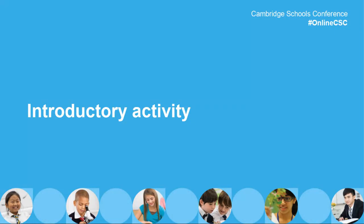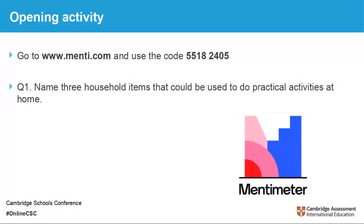It's lovely to be working across the world with so many people from different places. We're going to start by interacting using Mentimeter. If you've got a device - a mobile phone or computer - please log in to menti.com using the link in the chat, then type in the code 55182405. The first question asks you to brainstorm three household items you've been using or thinking about using at home during practical activities.